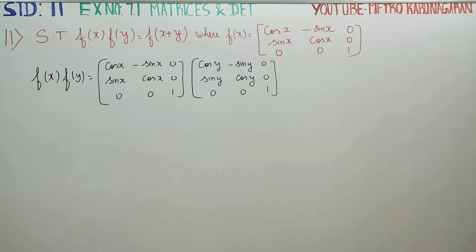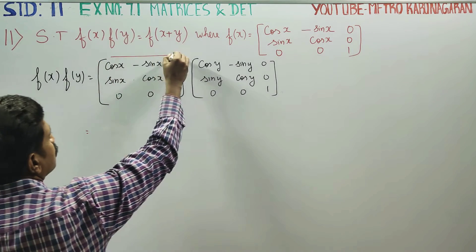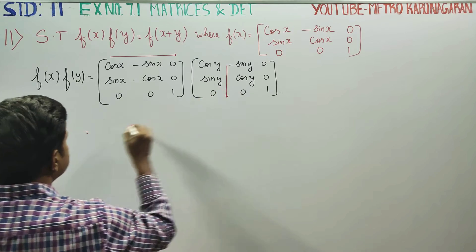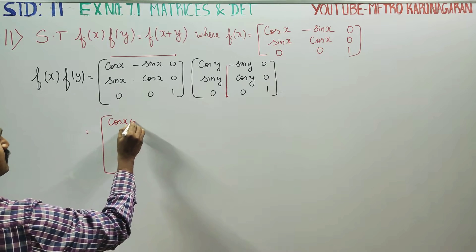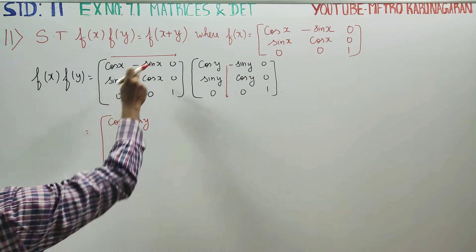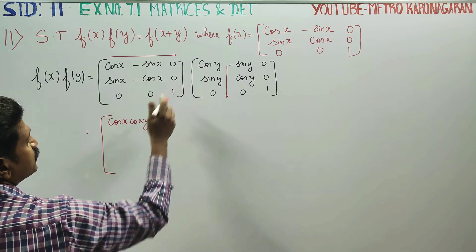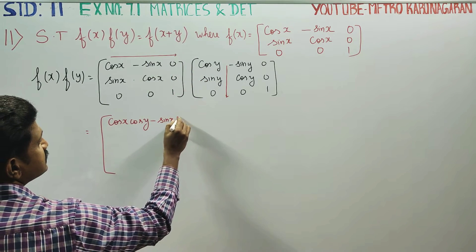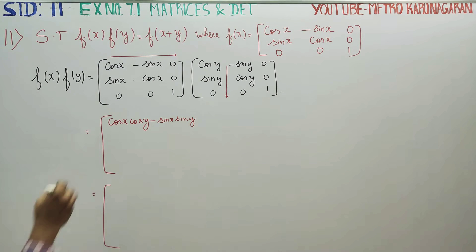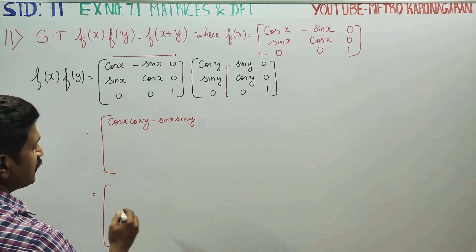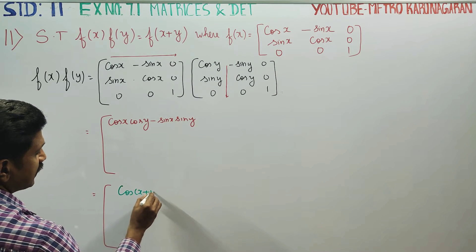Now, we have to multiply f(x) into f(y) using the row into column method. cos x into cos y is cos x·cos y. Then, minus into plus is minus sin x·sin y. If you look at this, cos a·cos b minus sin a·sin b is the cos(a+b) formula.